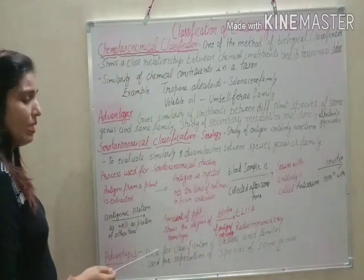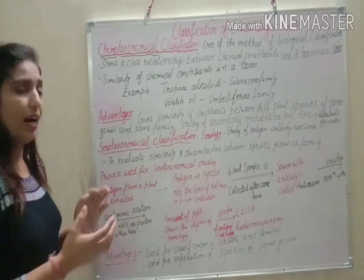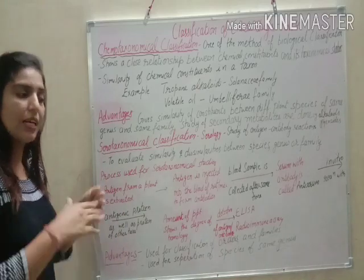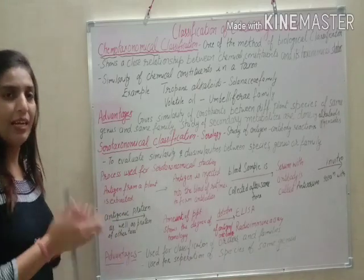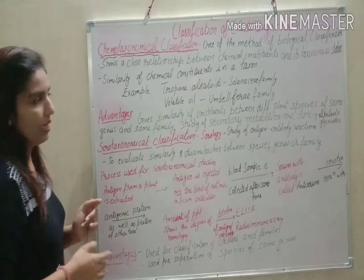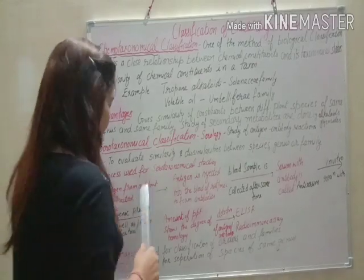After labeling with either enzyme or radioactive elements, if coagulation is observed, it means Plant A and Plant B are similar.